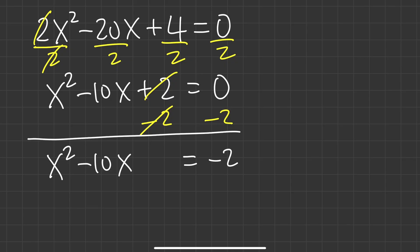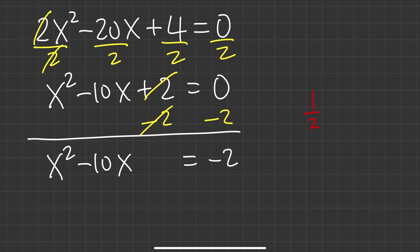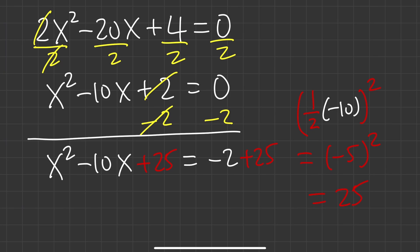Even though negative 10x makes a geometric picture tricky — you'd have to subtract area — we just follow the steps. Take half of b, where b is negative 10: half of negative 10 is negative 5. Square that to get positive 25. Add 25 to both sides. The left side factors as x minus 5 squared — the negative 5 always comes from the half-b value.